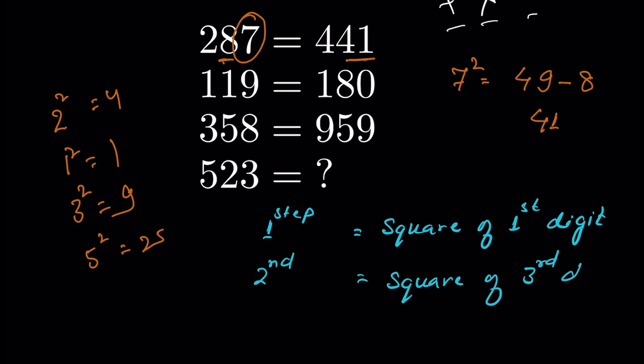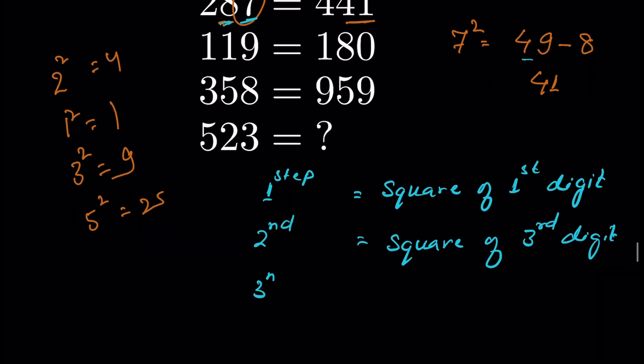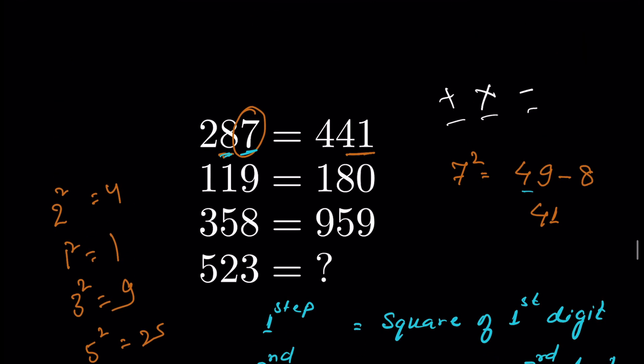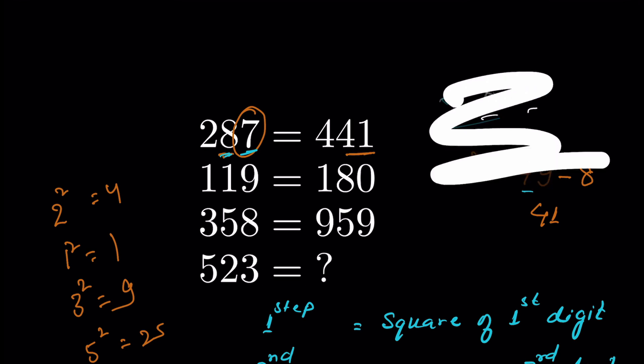Let's calculate square of third digit. Square of third digit is 49 here, and then if we subtract the second digit, the second digit.